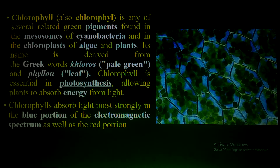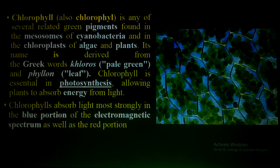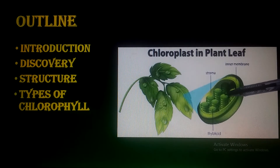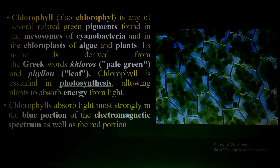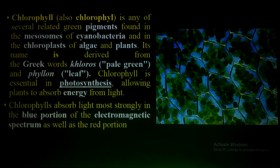In the case of algae and plants, this chlorophyll is present in a specialized structure which I discussed in detail in my previous lecture — the chloroplast — specifically in the granum or thylakoid membrane. The word chlorophyll is a Greek word derived from two parts: 'chloros' meaning pale green color, and 'phyllis' meaning leaf.